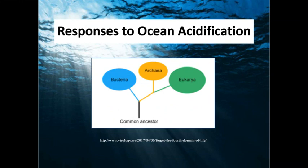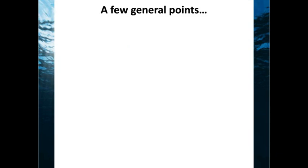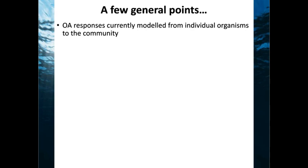Moving on to taxonomy: we have bacteria, archaea, and eukarya. Eukaryotes comprise a lot of the organisms we're about to discuss. Ocean acidification responses are currently modeled from individual organisms all the way up to the community level. The effects we interpret depend on the level we're looking at, whether that be the whole ecosystem or just one organism or one cell.